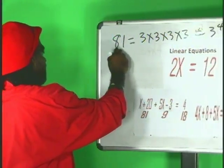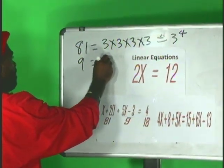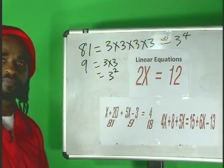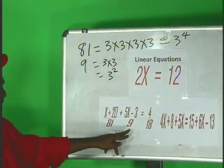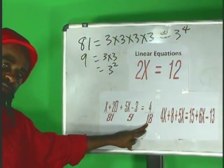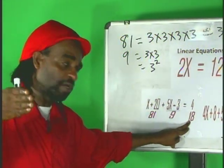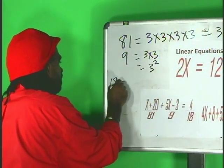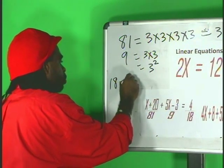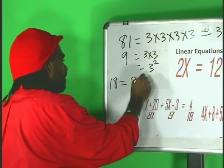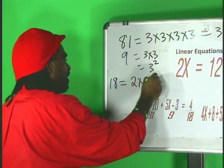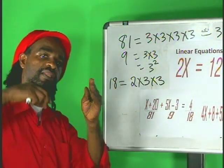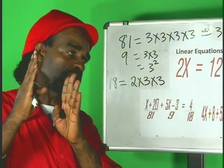And 9, 9 is equal to 3 times 3, which is equal to 3 squared. Similarly, 18 must be expressed as a product of prime numbers. So, 18 is equal to 2 multiplied by 3 multiplied by 3 because these numbers are all prime numbers.